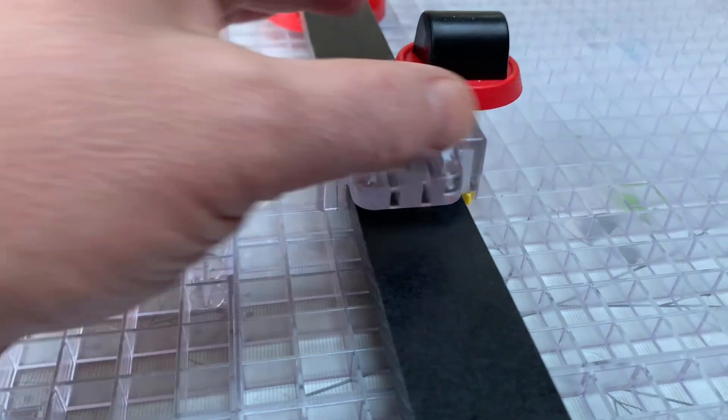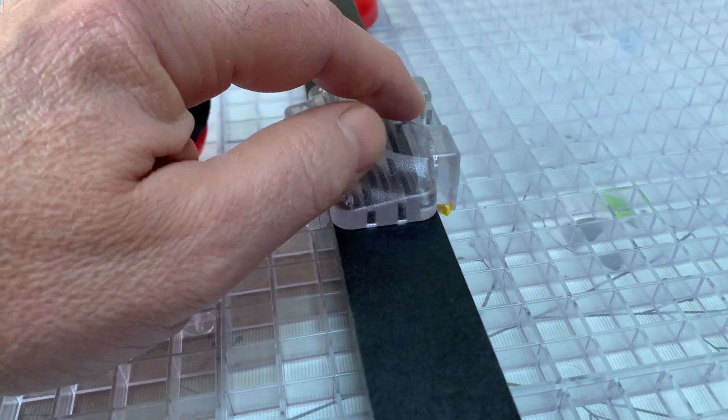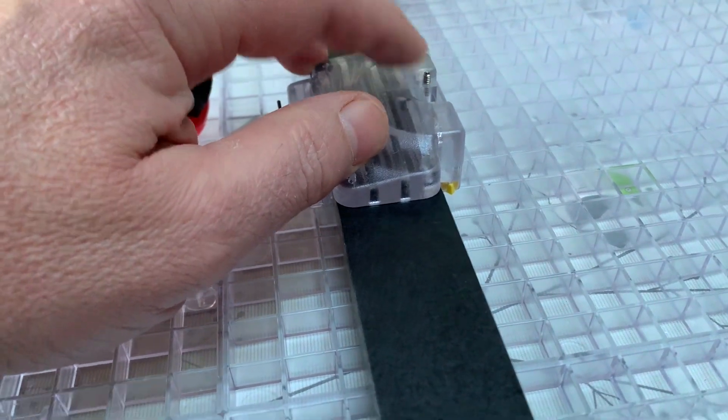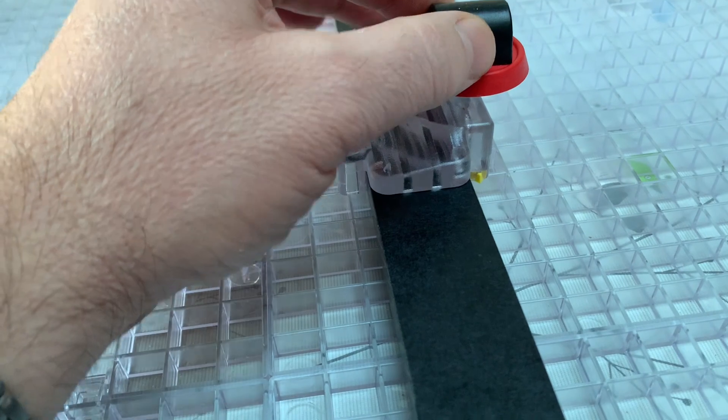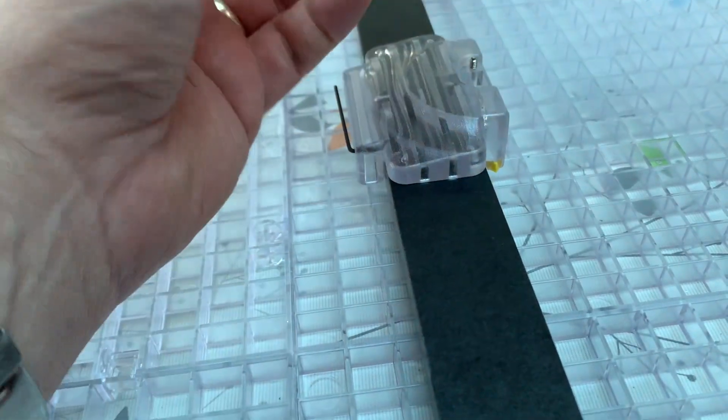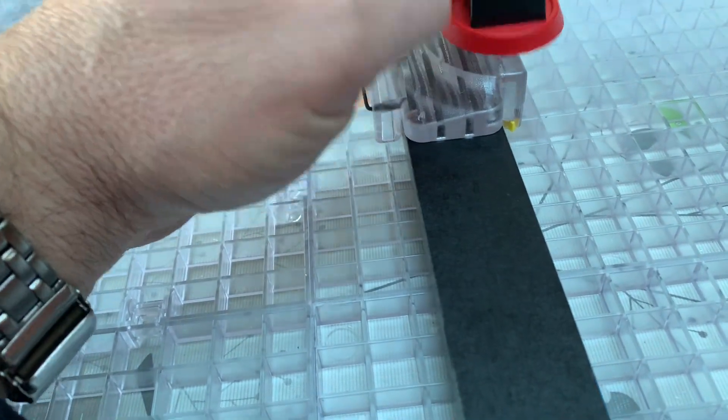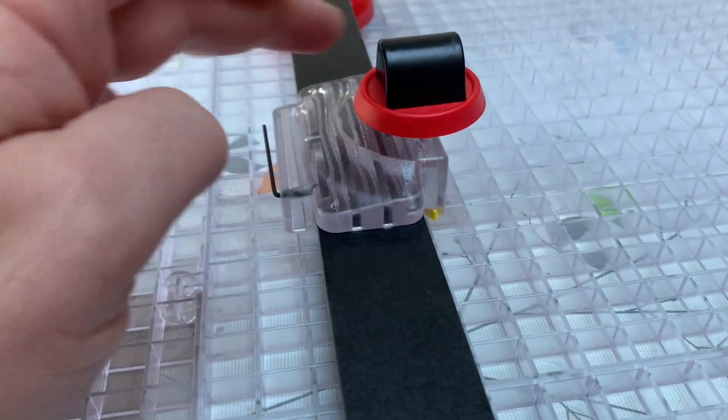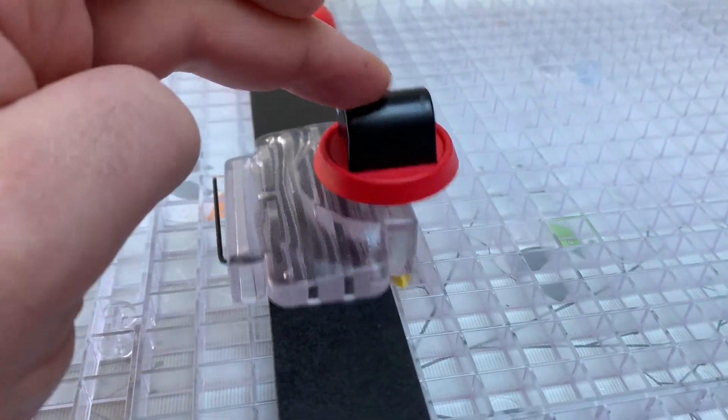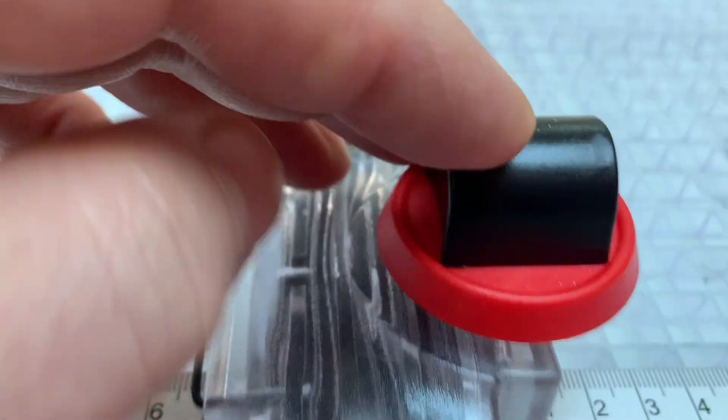It's just for this screw here. Wind it up and down, and that sets the cutting depth. It just stops it from coming off at the end and damaging your ruler.